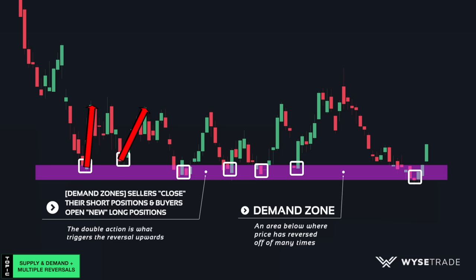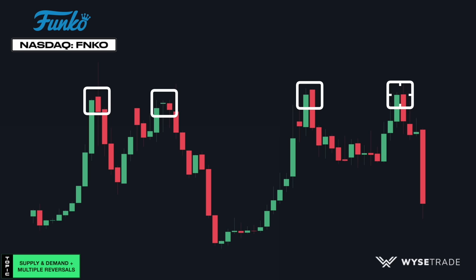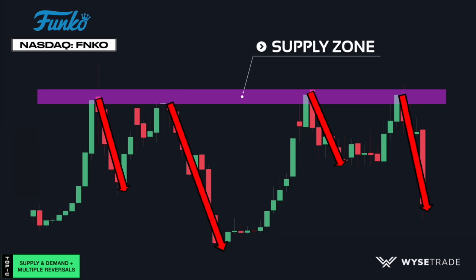Let's show this again. This is the Funko stock. Notice how on multiple separate occasions, price tried to push through this area and failed, making it a supply zone and presented a ton of great short trade opportunities.